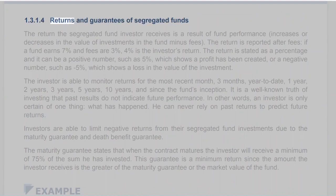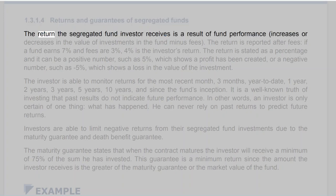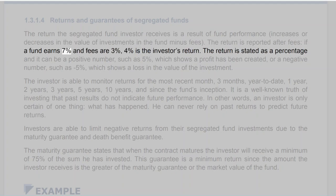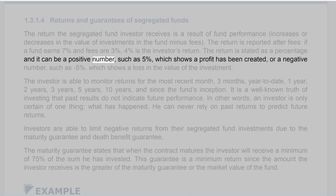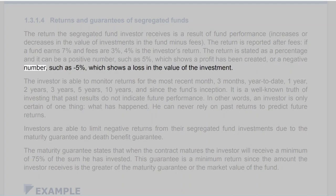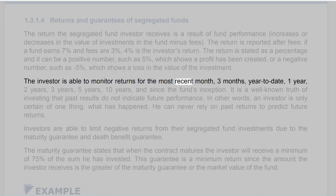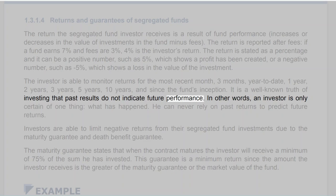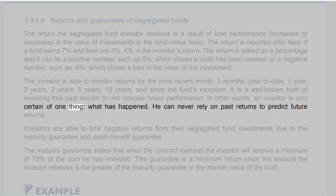Section 1.3.1.4: Returns and Guarantees of Segregated Funds. The return the segregated fund investor receives is a result of fund performance — increases or decreases in the value of investments in the fund minus fees. If a fund earns 7% and fees are 3%, then 4% is the investor's return. The return can be positive, such as 5% showing a profit, or negative, such as minus 5% showing a loss. The investor is able to monitor returns for various periods — the most recent month, 3 months, year-to-date, 1 year, 2, 3, 5, 10 years, and since inception. It is a well-known truth of investing that past results do not indicate future performance.